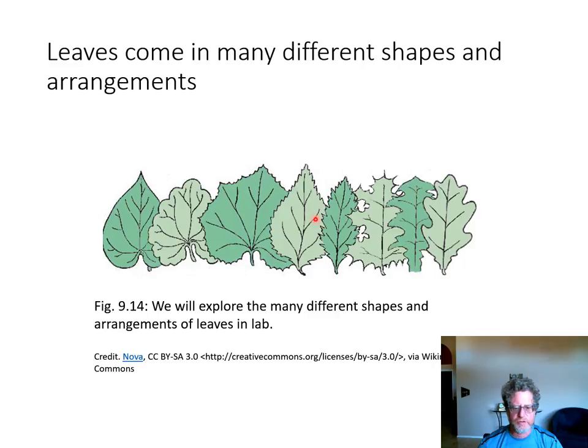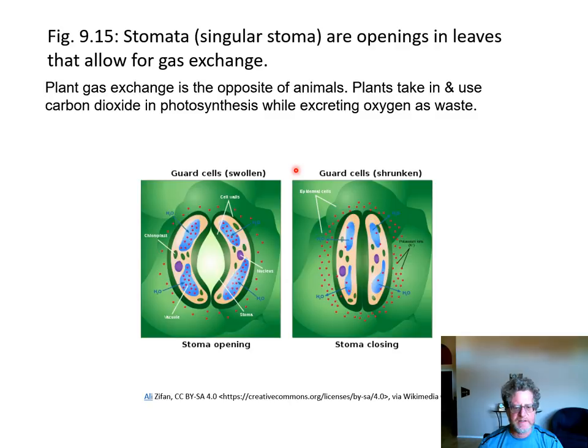One last thing about leaves: they do gas exchange. Animals like us take in oxygen and breathe out carbon dioxide; plants are the opposite — they grow using carbon dioxide and get rid of oxygen. Since leaves are waxy to save water, they have special cells that open up to let in carbon dioxide and let out water. These cells are called stomata — singular is stoma, but I'll call them stomata.